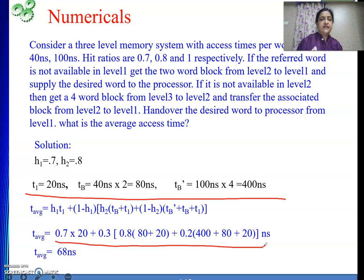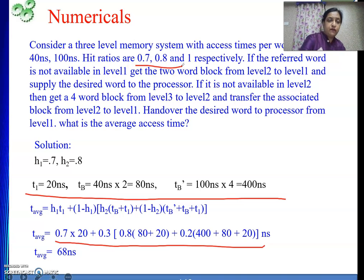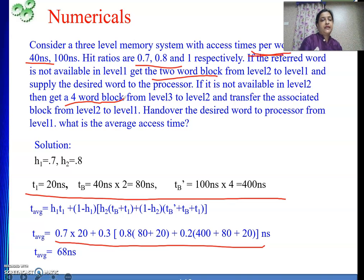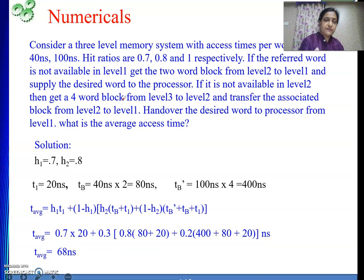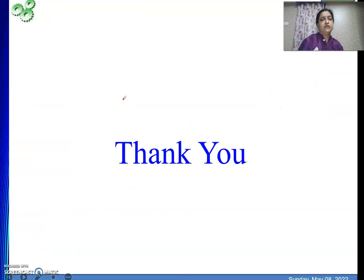Hope this numerical is clear. Though the question is longer, the answer is simple. You only need to understand the concept — what you are transferring, how much time is taken, and where to put what. The access times given are per word, but you are transferring a block, so you need to find the block transfer time. If all the small components are correct, we will definitely get the correct final result. Hope this numerical is understood. If you are benefiting from these explanations, please do not forget to like my videos and subscribe to my channel. Thank you.